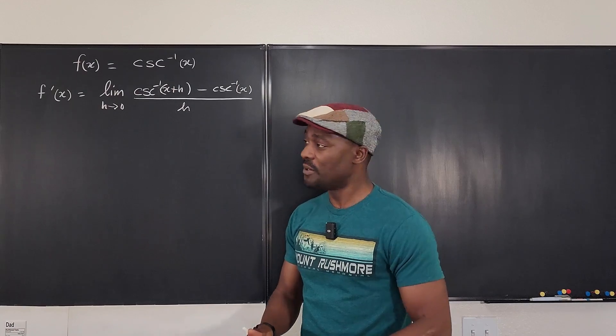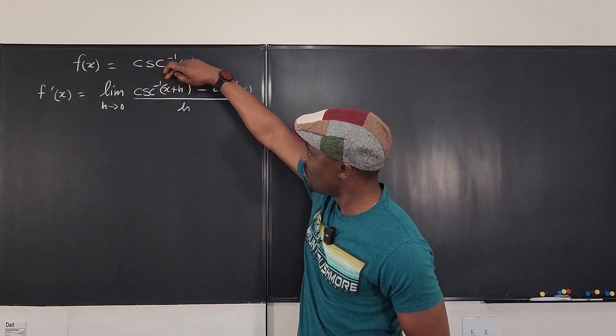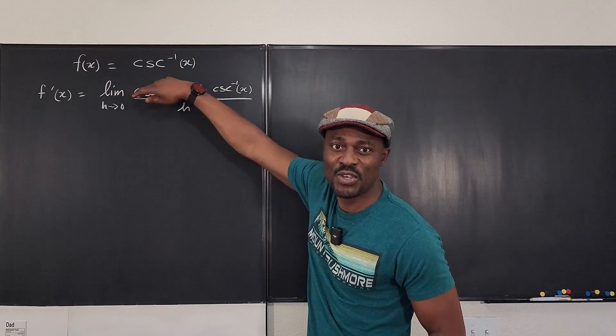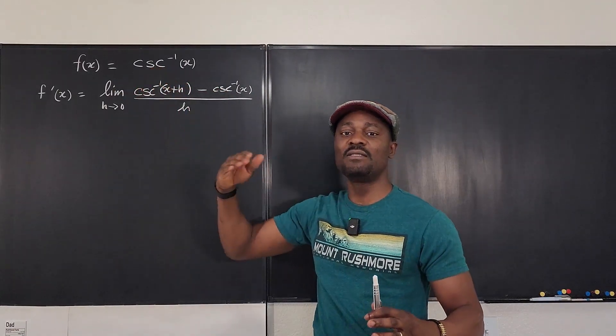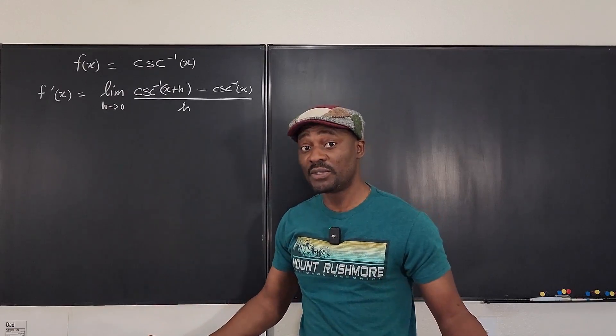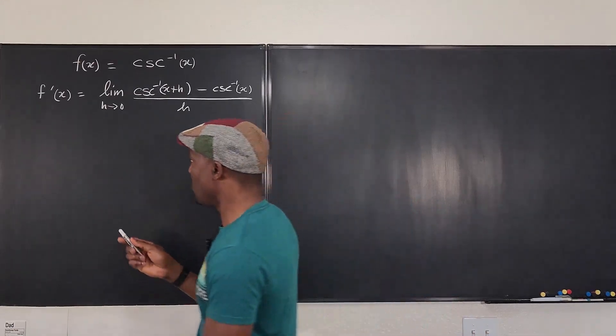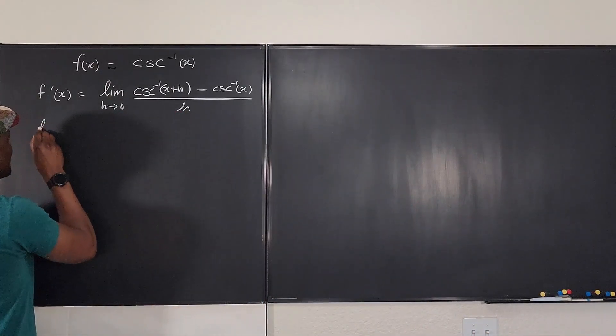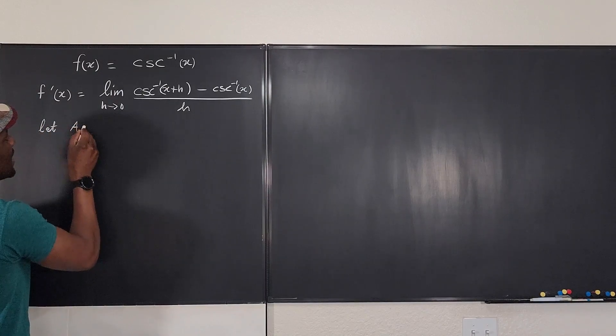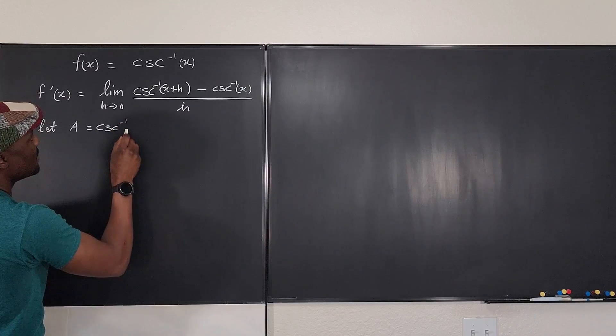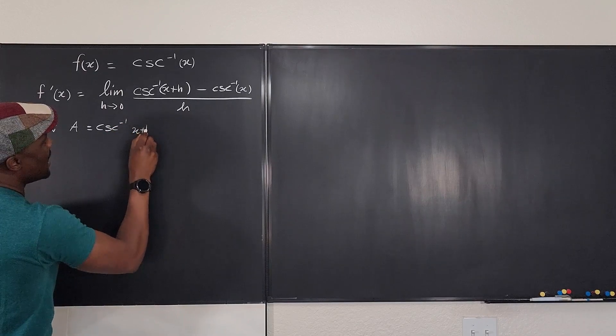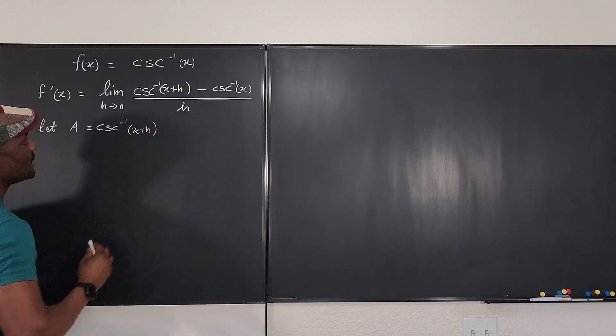The first thing as usual to do is to replace this because you don't know any trig identity you're going to use to expand this. So why don't we replace it and take it to the region where we're comfortable. The first thing is we're going to say, let a be equal to cosecant inverse of x plus h.